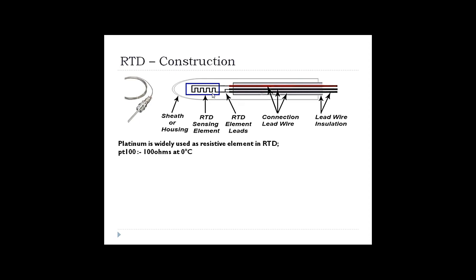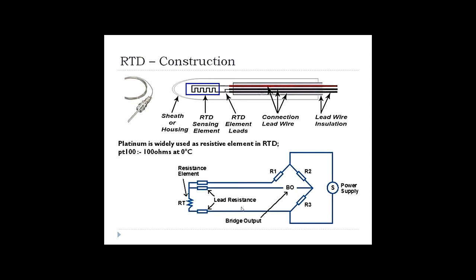Platinum is widely used as the resistive element in RTD. We call it Platinum-100 or PT-100. PT-100 means it provides 100 ohms resistance at 0 degrees Celsius. PT-200 would provide 200 ohms resistance at 0 degrees Celsius. So the RTD is used to measure temperature — if the temperature is 0°C, the output of the RTD will be 100 ohms.